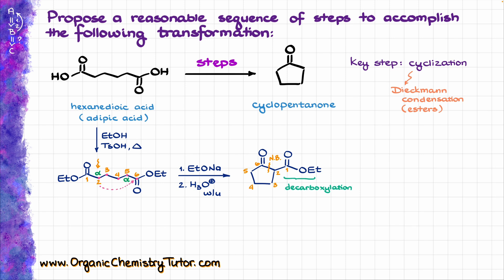The only thing left is to perform the decarboxylation reaction to get rid of carbon number one and the ester with it. That's actually going to be a multi-step process: first I'm going to start by hydrolyzing my ester to the corresponding carboxylate, then I'm going to neutralize to the carboxylic acid, and finally I'm going to raise the temperature just a little bit to do the decarboxylation and get my final product.